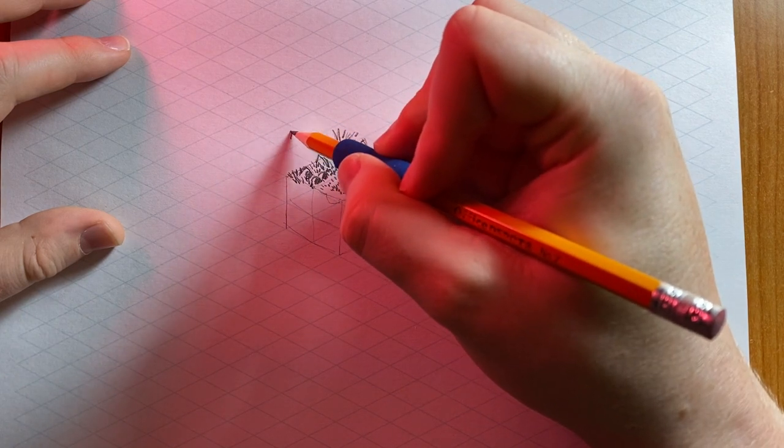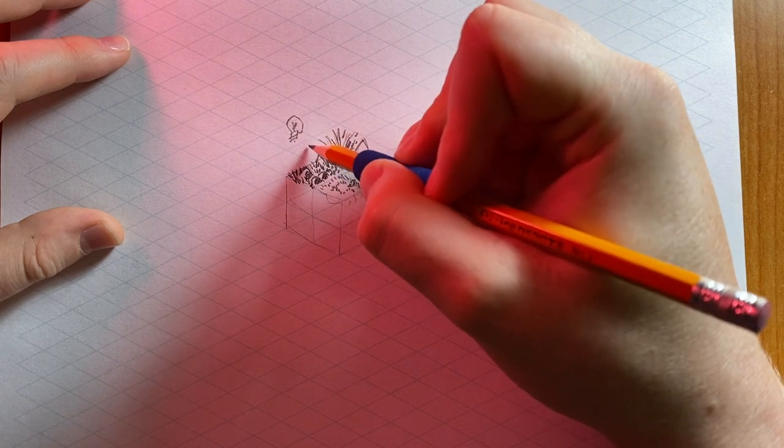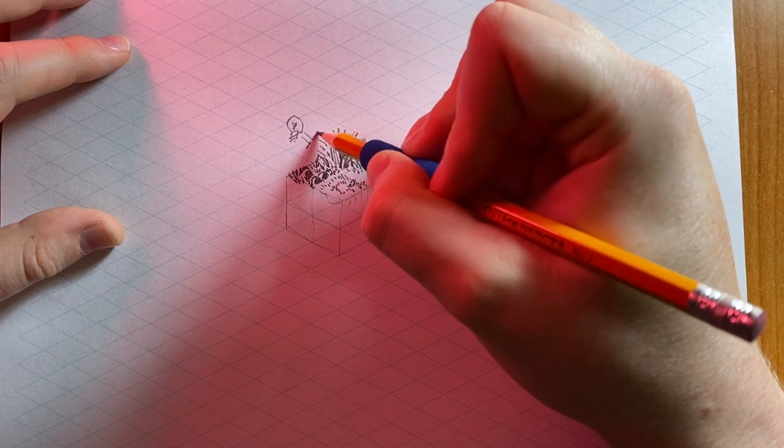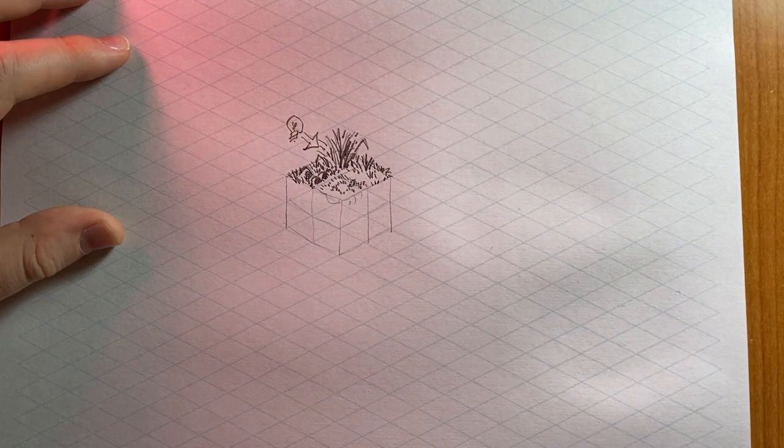And then, once you do that, make sure that you keep the lighting direction in mind. That's really going to help you give your grass volume.